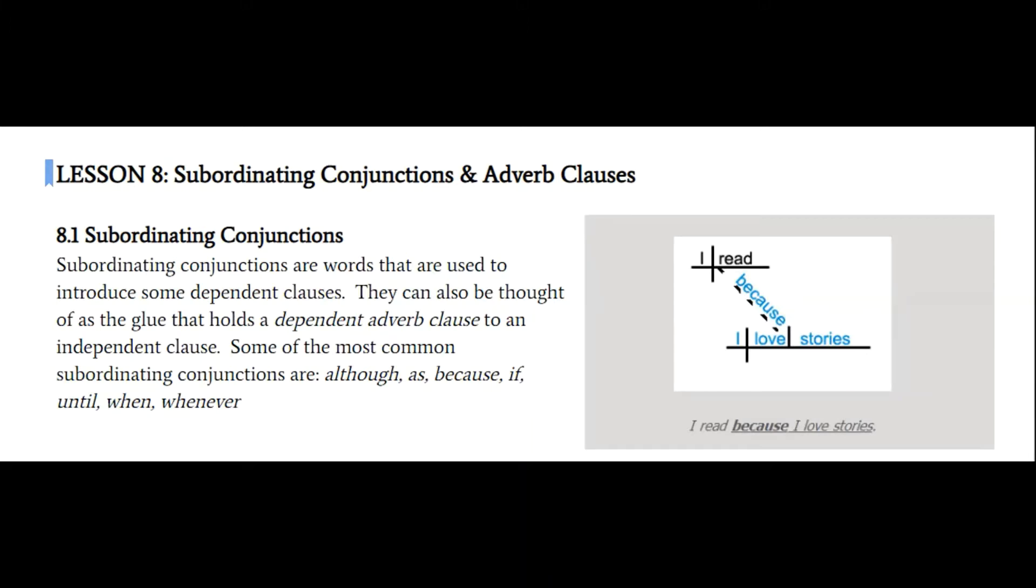An independent clause has a subject and a verb and it makes sense. A dependent clause starts with a subordinating conjunction, then has a subject and verb, but it doesn't make sense on its own. It's dependent on the rest of the sentence.